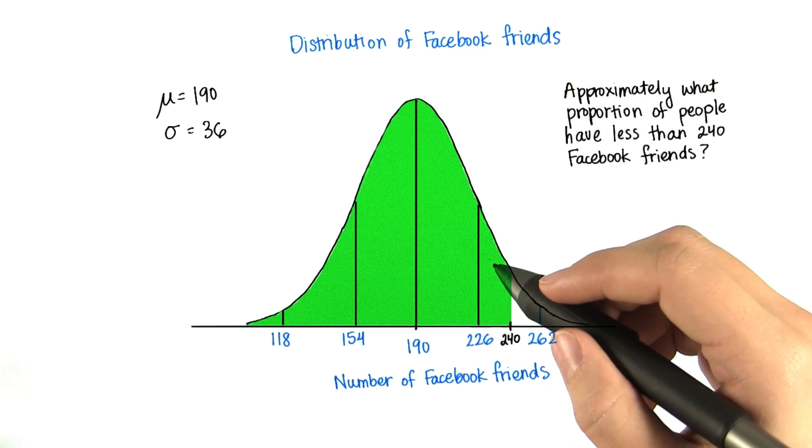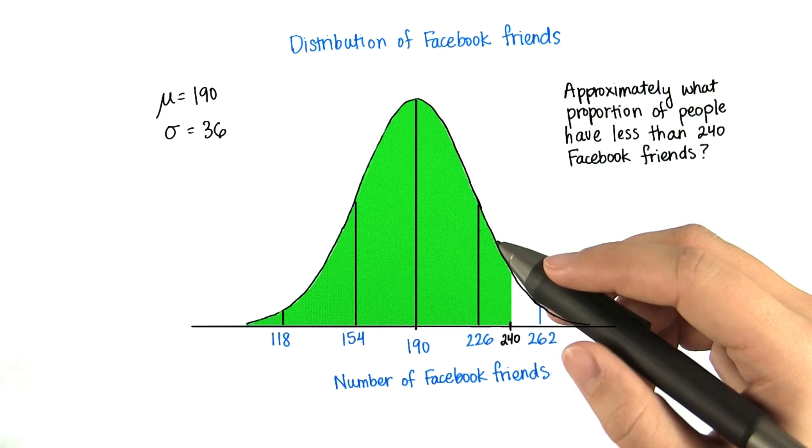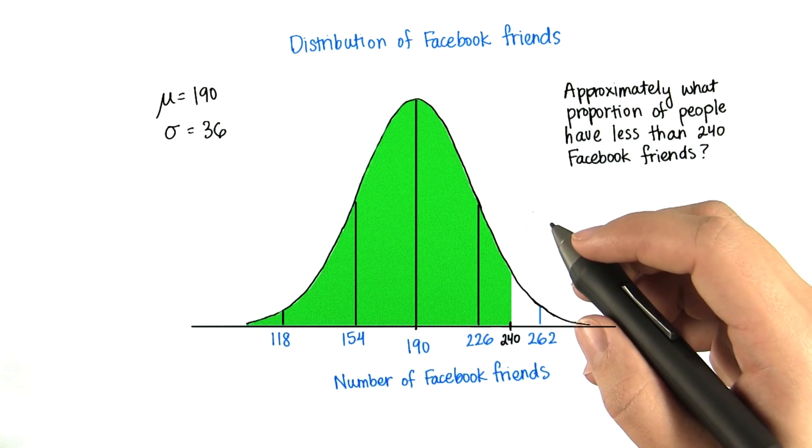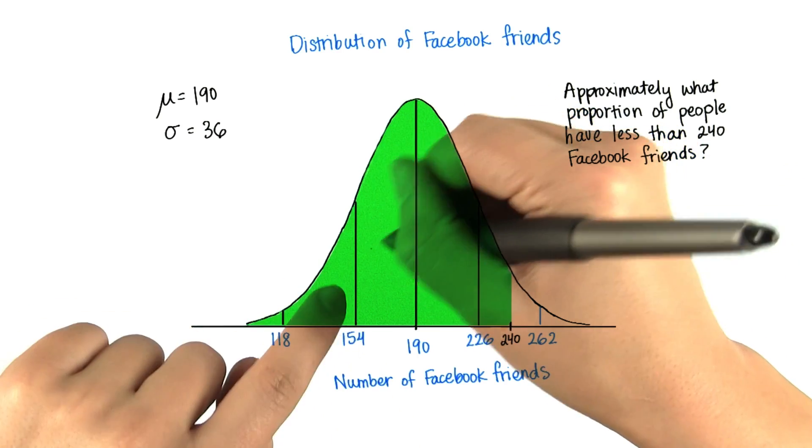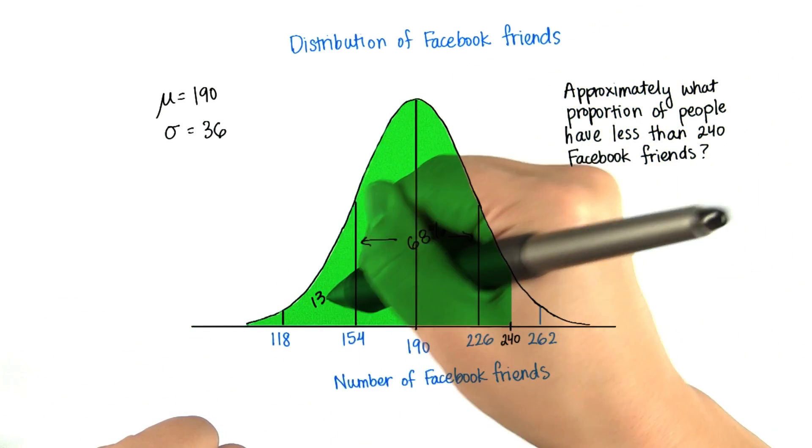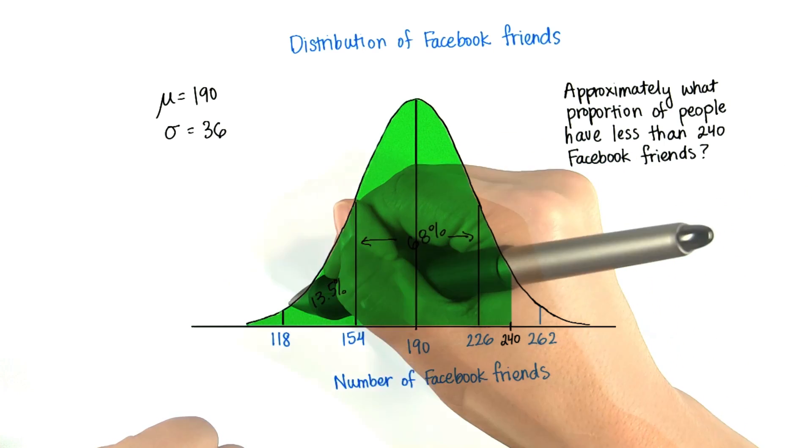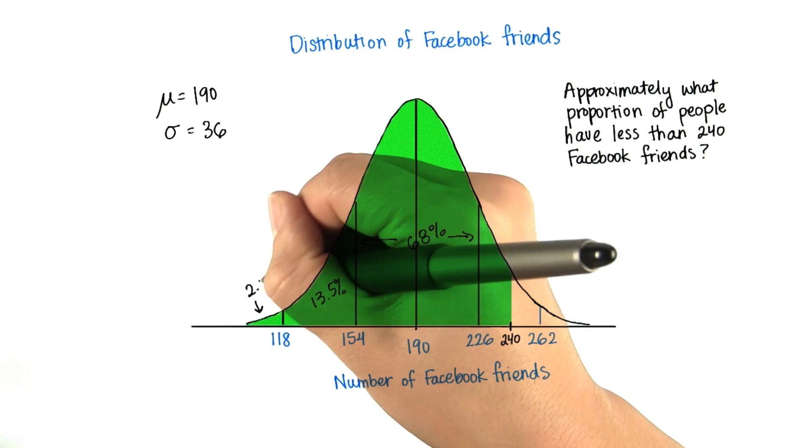We can guess that it'll be between approximately 84% and 97.5% because we know that this is 68% between here and here, 13.5% here, and 2.5% here.